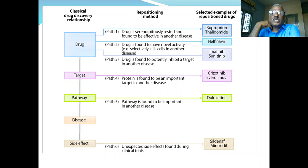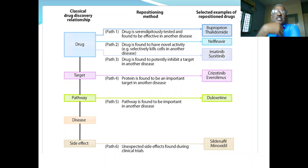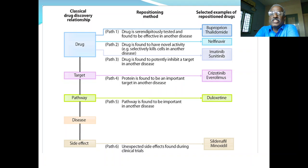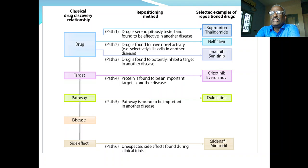Bupropion is a drug for depression, now used for the treatment of obesity. Pathway two: a drug is found to have novel activity — selectively killing cells in another disease. The best example is nelfinavir, a protease inhibitor with antiviral activity, which was found effective against 60 different cancer cell lines. In vitro cytotoxicity of nelfinavir against 60 cancer cells has been reported. Nowadays, instead of antiviral use, nelfinavir is potentially used for treatment of cancer.